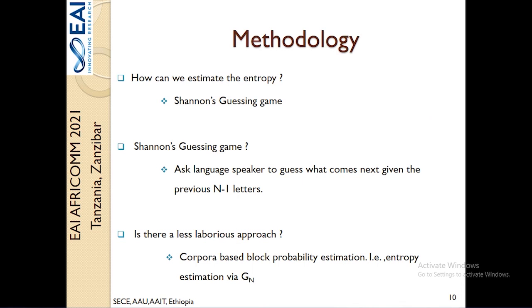So with this understanding, the next thing we asked ourselves is how can we estimate the entropy? We identified three techniques - here we mention two. The first one is the Shannon guessing game, which requires a language speaker to guess the occurrence of letters given n minus one previous letters, and then correlate the correct and incorrect guesses with the occurrence of symbols. But this is cumbersome and tedious, so we avoided this approach and tried to estimate the entropy using a corpora written in Afan Oromo.